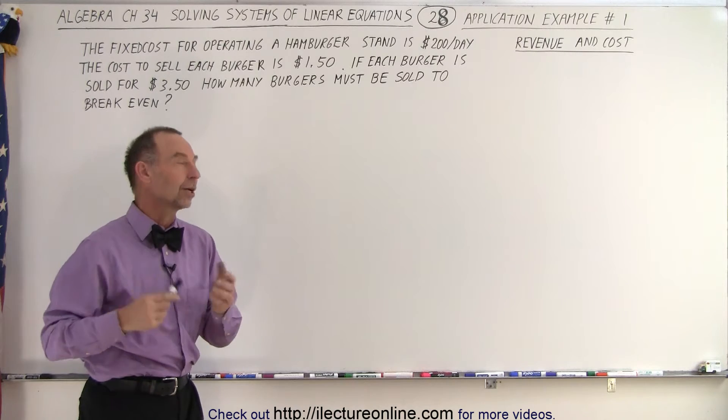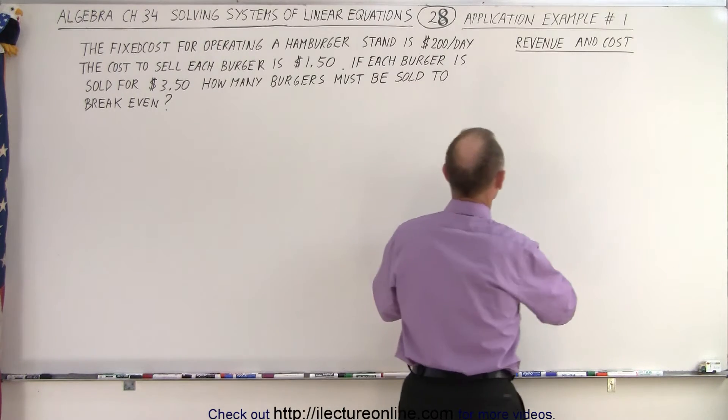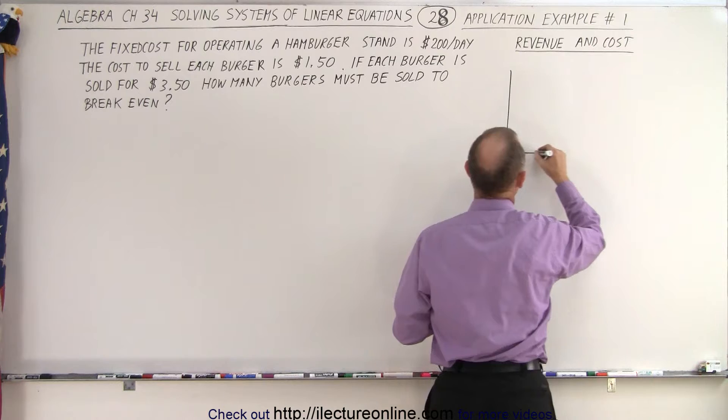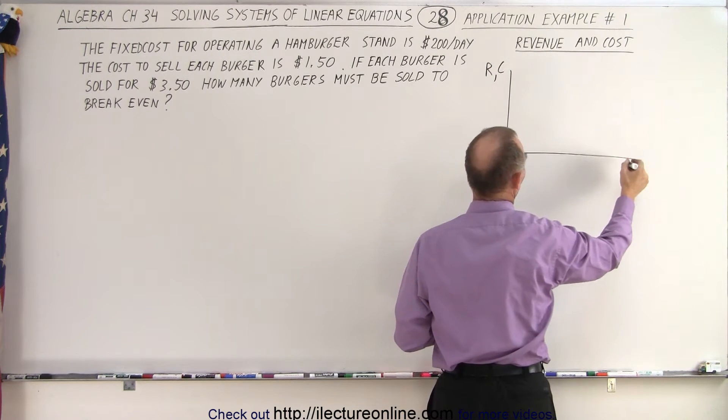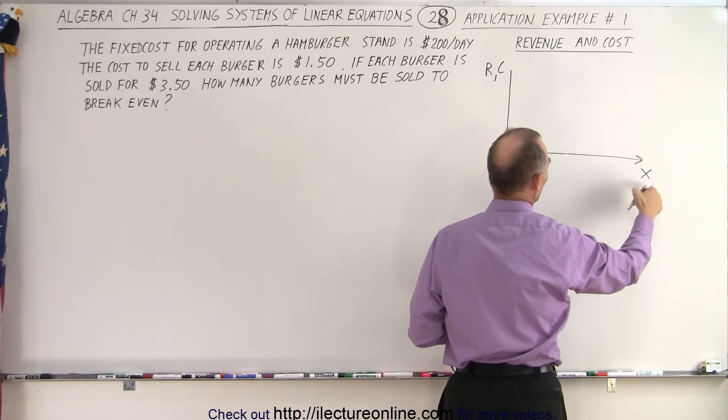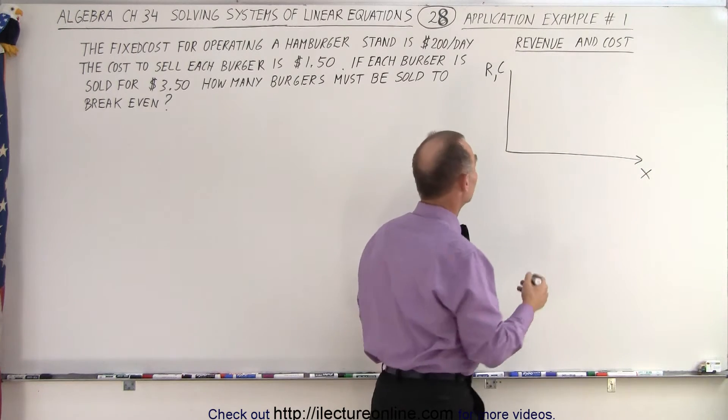If each burger is sold for $3.50, how many burgers must be sold to break even? All right, what does that look like on a graph? Let's do a graph first. So on the vertical axis we have revenue and we have cost. On the horizontal axis we have x, that would be the quantity sold or the quantity produced.